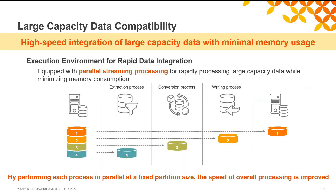As the utilization of data becomes widespread, you will need to process larger amounts of data. DataSpider has a feature for rapid processing of large amounts of data called parallel streaming. It partitions large amounts of data automatically and processes each block in parallel, shortening data throughput time. Also, the input data is stored in memory by a unit of block, so you can process large amounts of data without worrying about the free space in the memory.